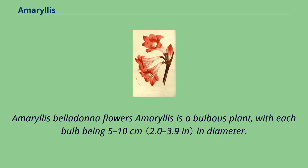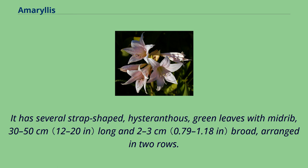Amaryllis is a bulbous plant, with each bulb being 5 to 10 centimeters in diameter. It has several strap-shaped, hysteranthous green leaves with a midrib, 30 to 50 centimeters long and 2 to 3 centimeters broad, arranged in two rows.